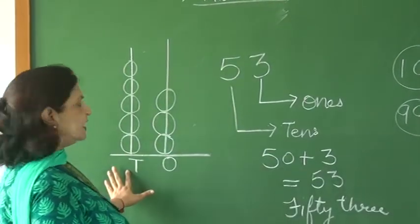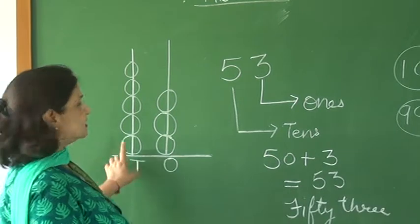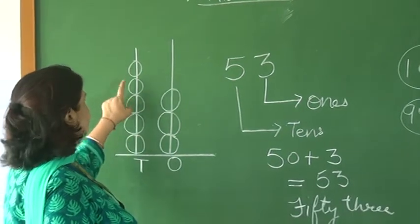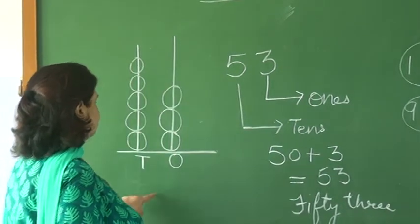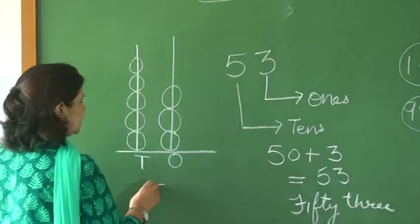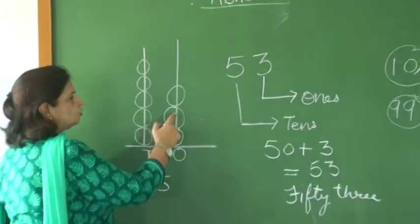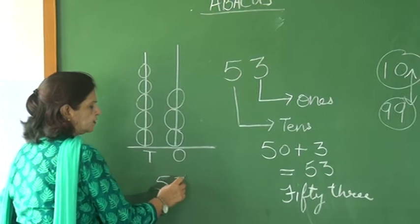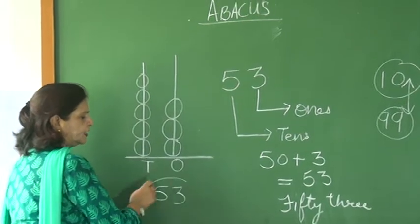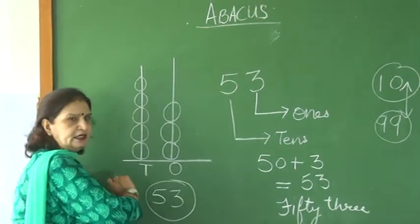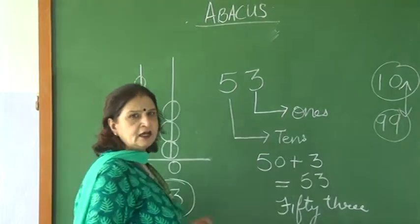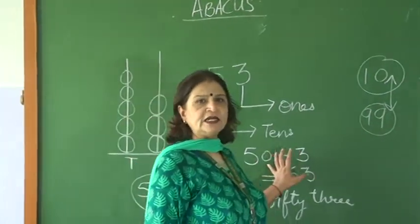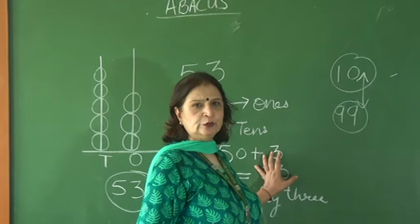Now, easily if we read the abacus: 1, 2, 3, 4, 5 — you write first 5 at tens place. Then 1, 2, 3 — you write 3 at ones place. You will get 53. I hope it is clear to you.